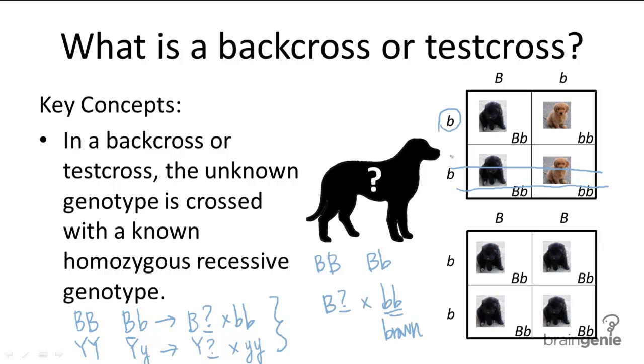And the more offspring the dog produces that are black, the stronger your conclusion, the less it can be attributed to chance.